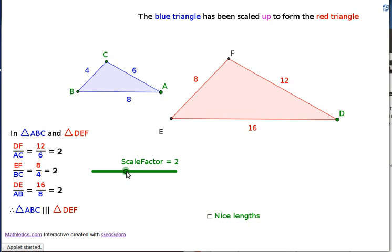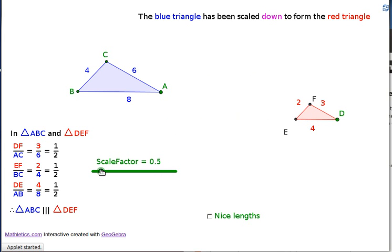If we change the scale factor, we can make it less than 1. Take it down to a half. You see the blue triangle, we say it's been scaled down, because the scale factor is less than 1. So this new triangle is half as long, the sides are half as long as the side 4 has changed to 2.